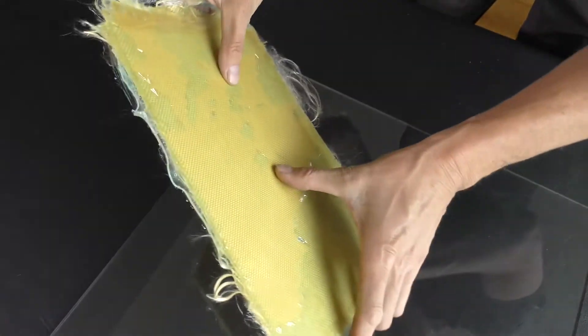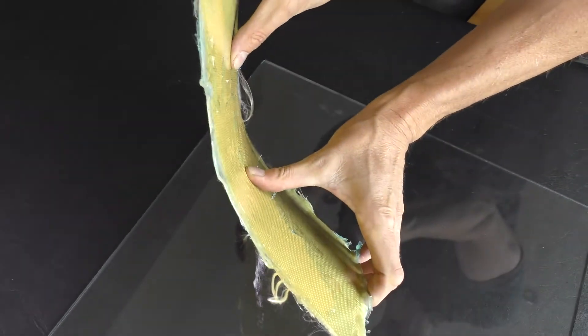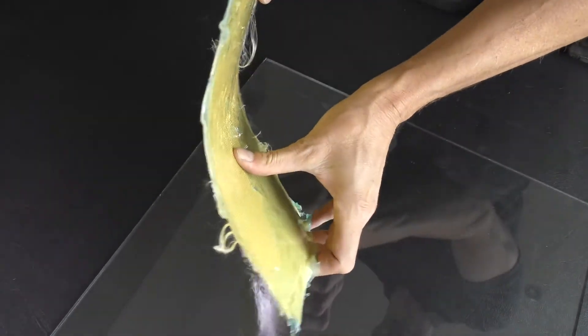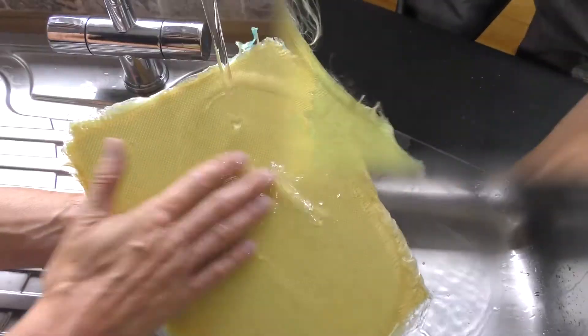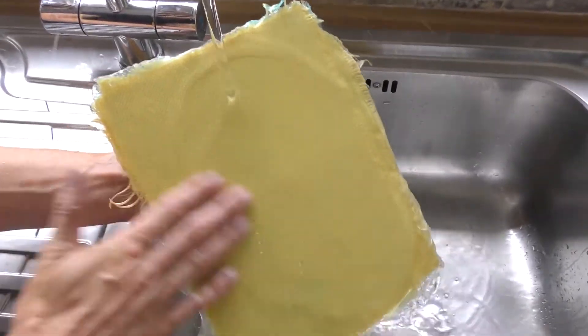You can bend it and form it into curves and once dry it'll harden and stay into that shape, but if you want it flat and glossy don't mess with it. Right we'll give it a quick wash and see what we've won.